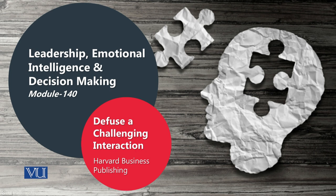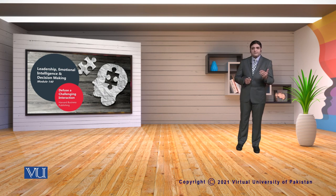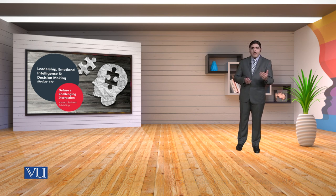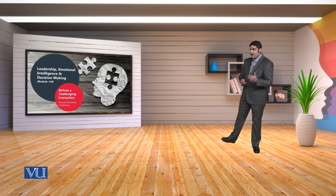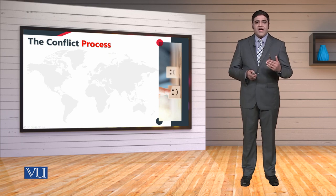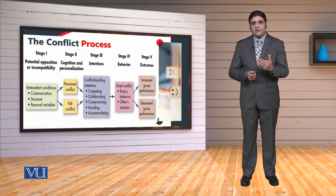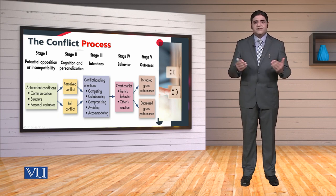This is module number 140 and we are going to talk about how to defuse a challenging interaction. When we are dealing with conflicts, we have to be careful that we emotionally tackle those conflicts. Remember that there is a complete conflict process that we have to understand. In the literature of conflict management, we can know how to deal with conflicts in different interactions and how we can affect our outcomes and performance. Let's start with the flow sheet diagram of how this process actually takes place.